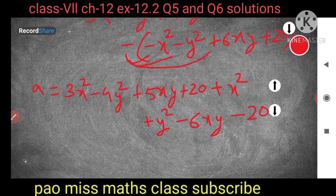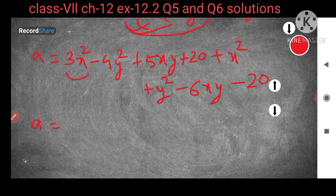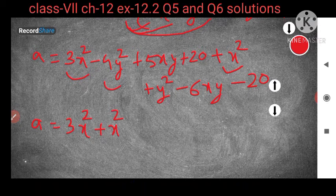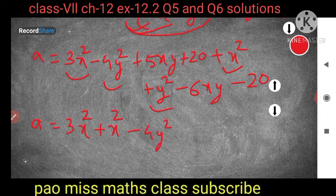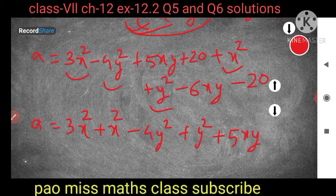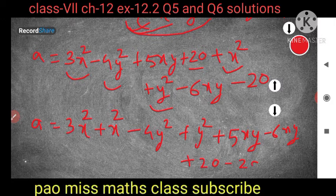Now what is the next step? We have to collect the like terms. Like terms means having the same variable. So here we can see x² and another x². That means 3x² plus x². Now the second variable is y² — we will collect the y²: 4y² and another plus y². Now the xy variable is remaining. So how many xy terms are there? 5xy and minus 6xy. And last, the constant terms: plus 20 and minus 20.